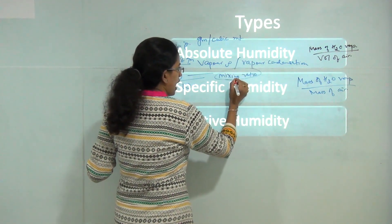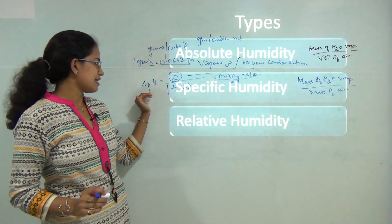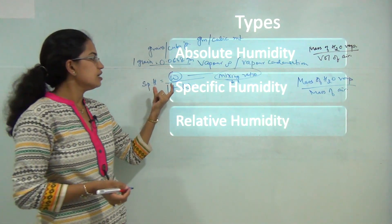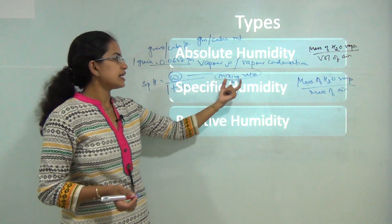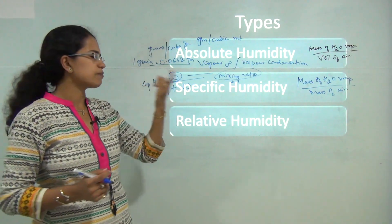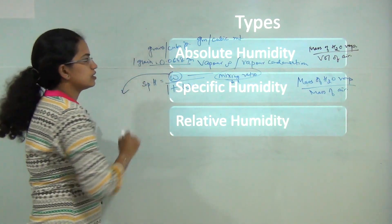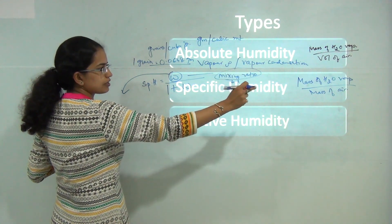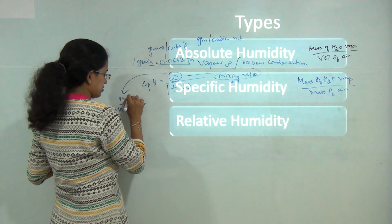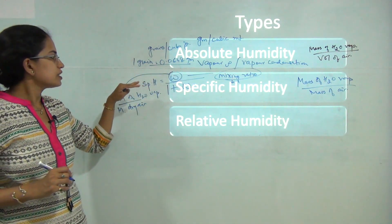Mixing ratio and specific humidity are interchangeably used but they are not exactly the same. Specific humidity equals mixing ratio divided by 1 plus mixing ratio, so there is a minimal amount of error. Mixing ratio is the ratio of mass of water vapor present per unit mass of dry air, and with it we can calculate specific humidity.